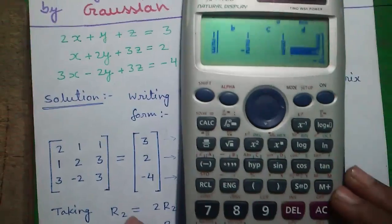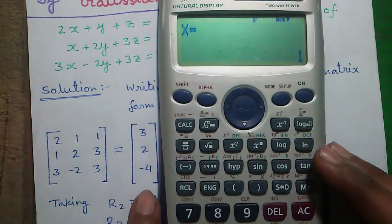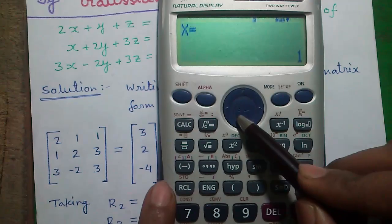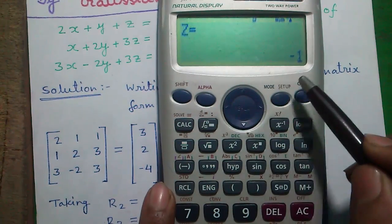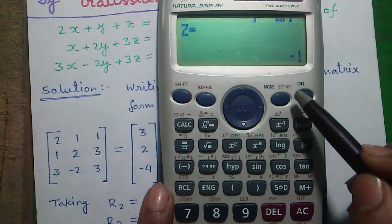And now we will press the equals to button. It will calculate X equals to 1, Y equals to 2, and Z equals to minus 1. Isn't it cool?